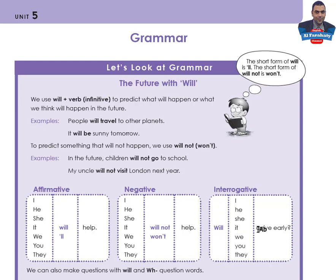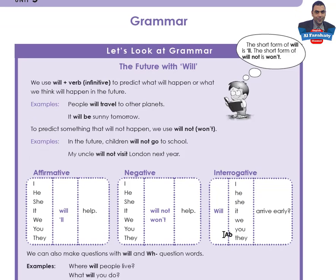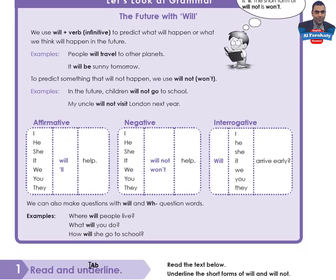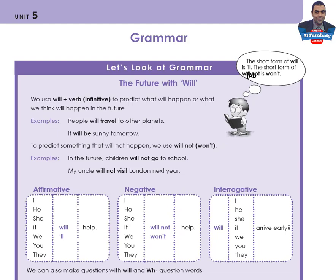For example: 'Will I arrive early?' To answer yes/no questions, use yes or no plus the subject then will or won't: 'Yes, he will.' / 'No, he won't.' 'Will she arrive early? Yes, she will. No, she won't.' We can also make questions with 'will' and WH-question words: 'Where will people live?' 'What will you do?' 'How will she go to school?' The short form of 'will' is apostrophe-ll — I'll, he'll, she'll, it'll, you'll, we'll. The short form of 'will not' is 'won't.'